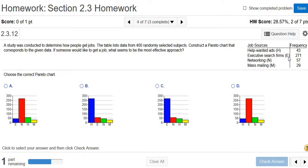So in this case, the most important, the biggest job source is executive search firms, so E. So E comes first in this case. So the answer should be C, right? Because here you have H, and that stands for help wanted. So the answer here is C.